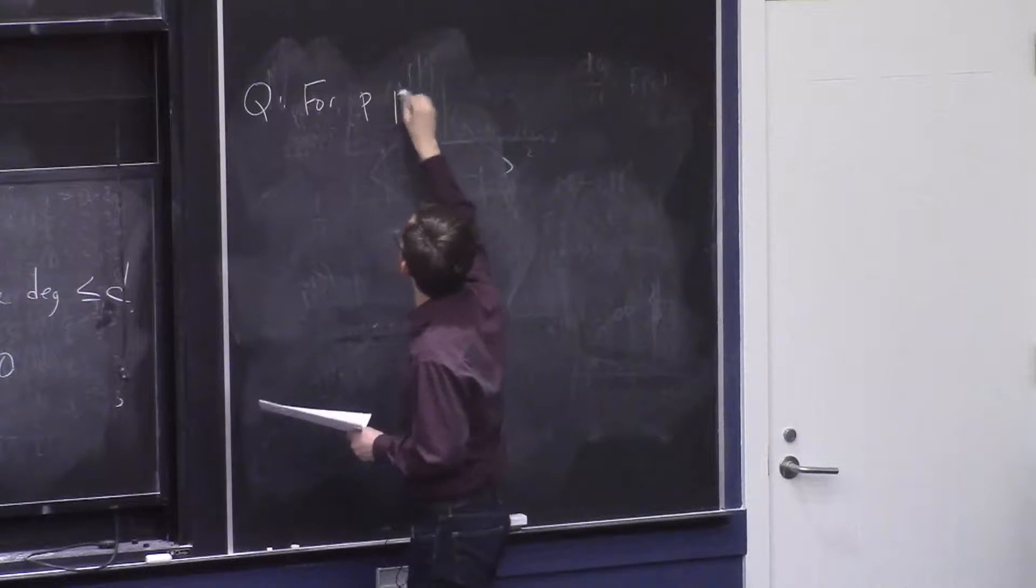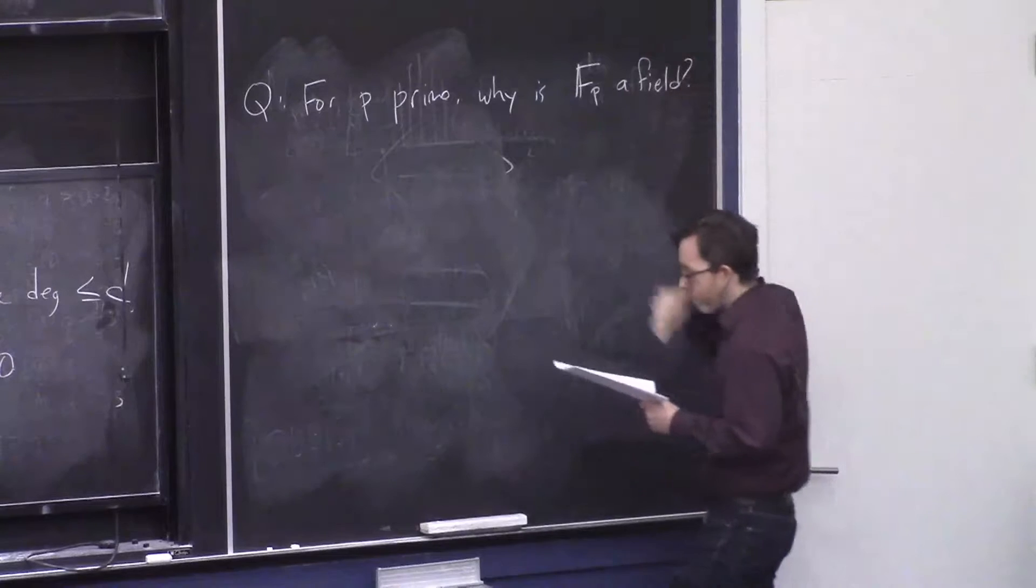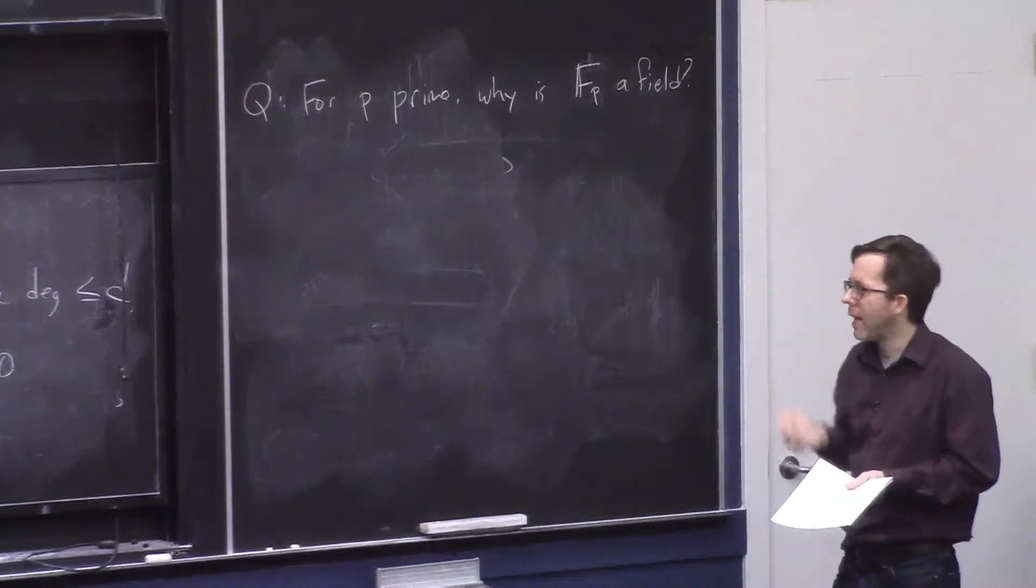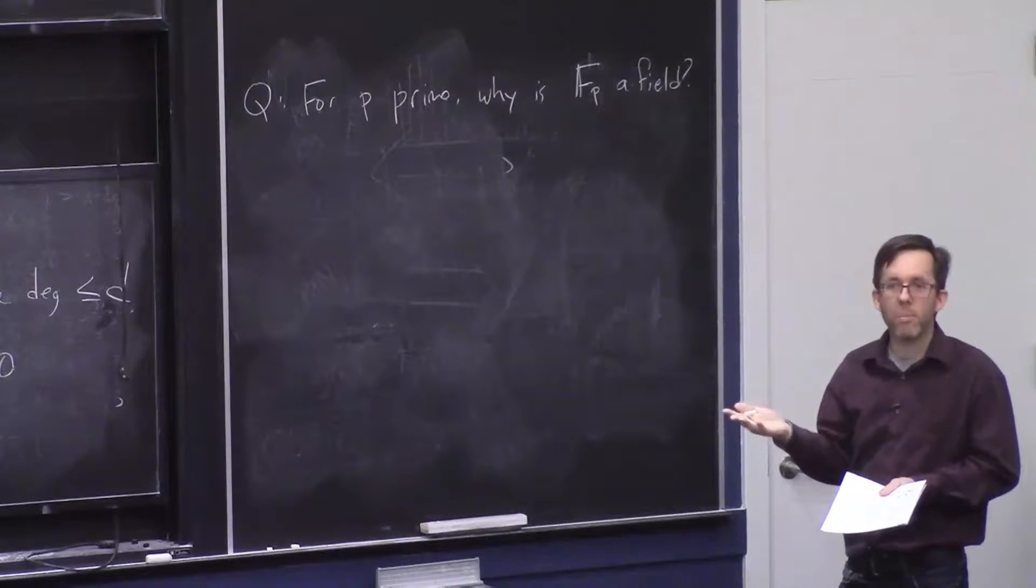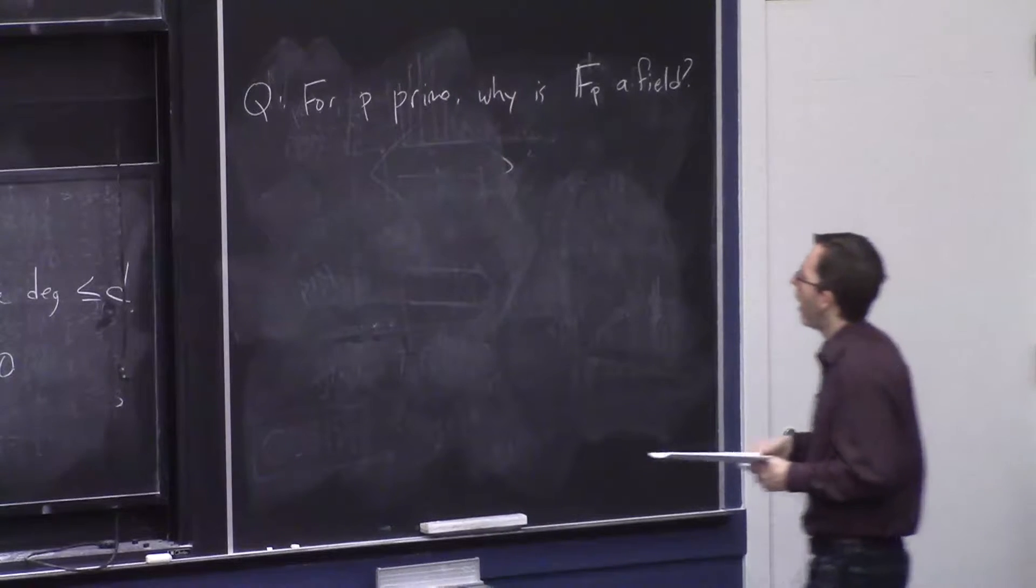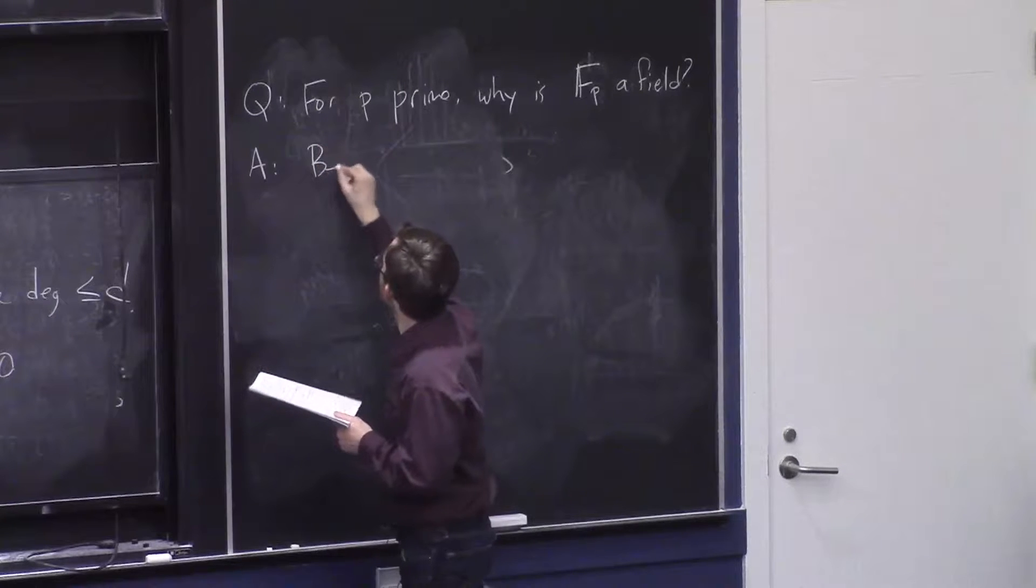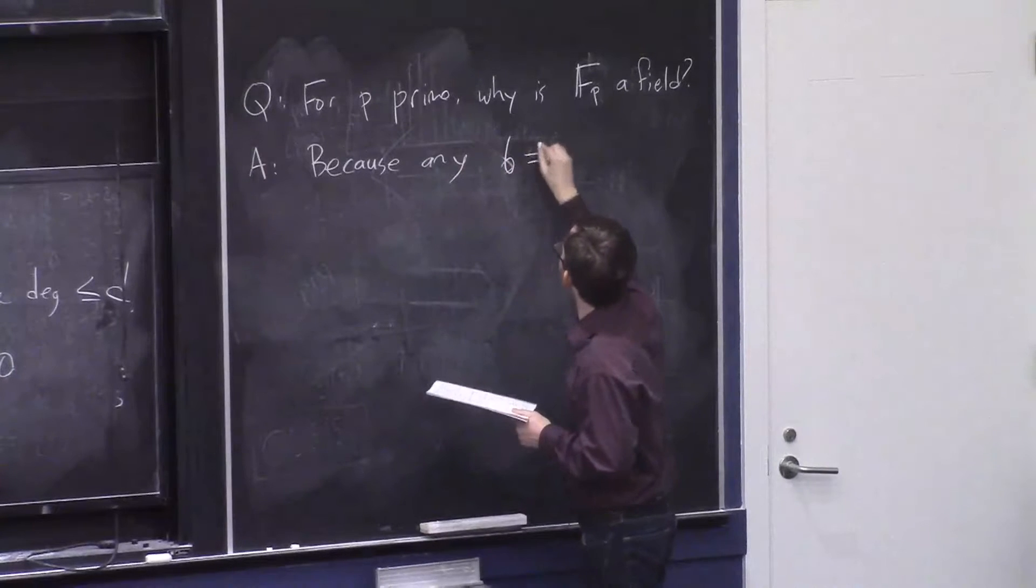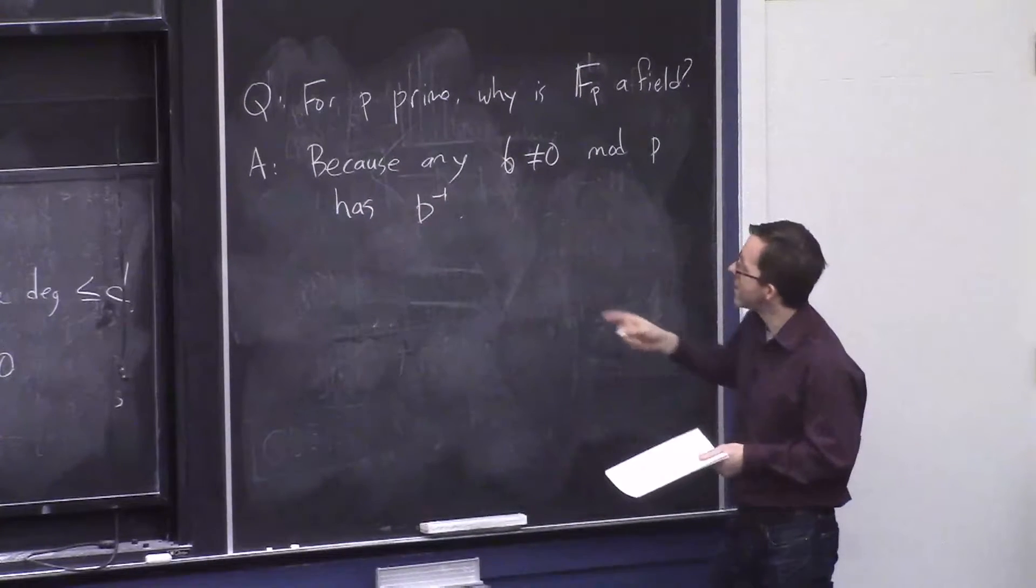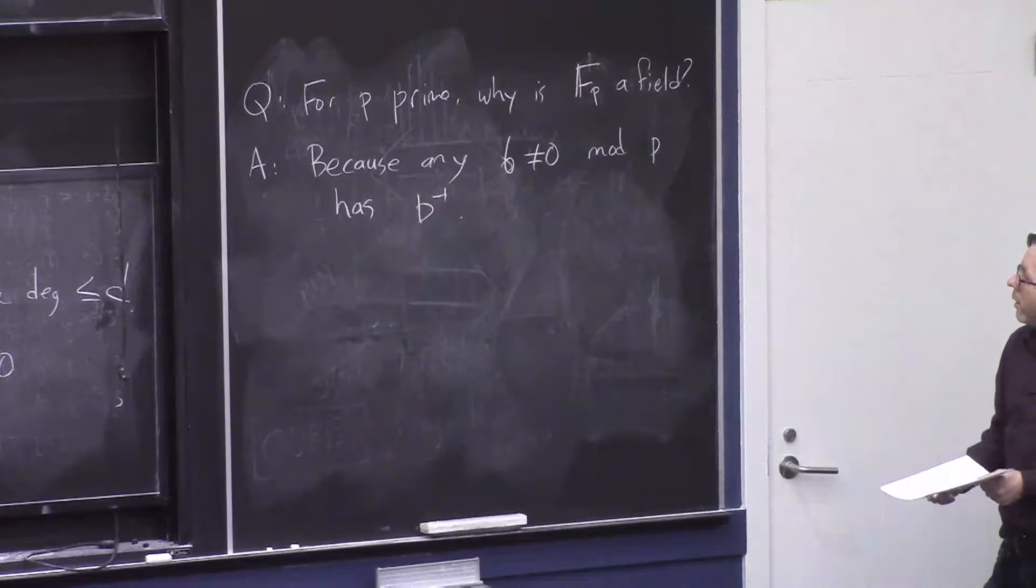So let's ask this question. For p a prime, why is this set, the integers mod p, a field? OK, and the thing we need to answer is, how come you can do a divided by b mod p? And really, you only need to understand, how can you do 1 divided by b mod p? You need to understand, what is the reciprocal of b? Because if you have that, then you can get a divided by b by multiplying a by the reciprocal. So the main question here is, the answer is because any b, which is not equal to 0 mod p, has a reciprocal. OK, and that means it's some number mod p, such that b times b inverse is 1.